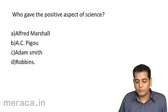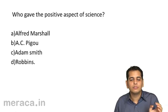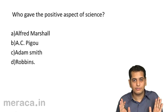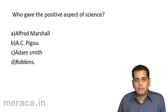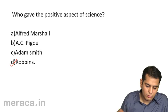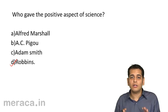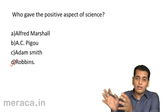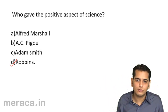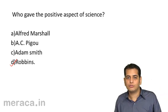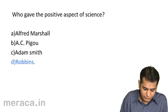Next: who gave the positive aspect of economics? Options: A, Alfred Marshall; B, Pigou; C, Adam Smith; D, Robbins. It was Robbins, because he said economics is neutral between ends. Economics is not about choosing — it only gives you a list of wants and a list of means to satisfy them. It does not tell you which want to satisfy, and this is the meaning of neutral between ends. So this definition was given by Robbins. That's the answer.